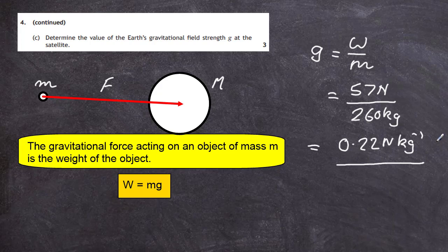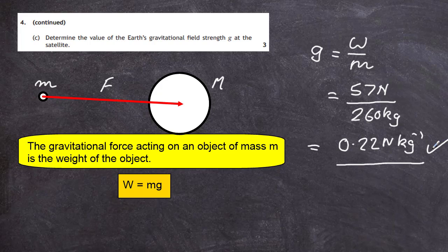If the satellite were placed on the surface of the Earth, the gravitational field strength would be 9.8 N/kg. The further we go away from the planet, the gravitational field strength — which is the weight per unit mass — decreases. That's the answer to question 4C.